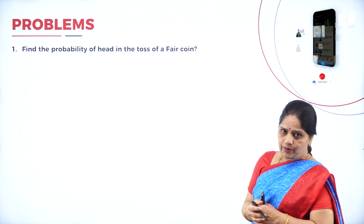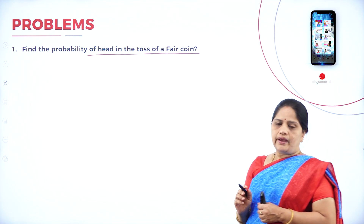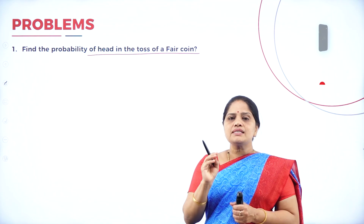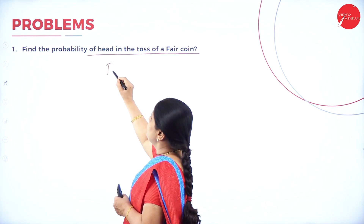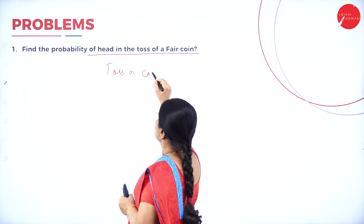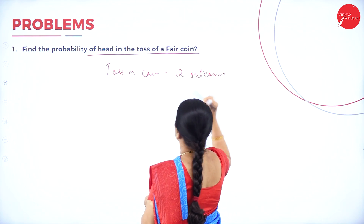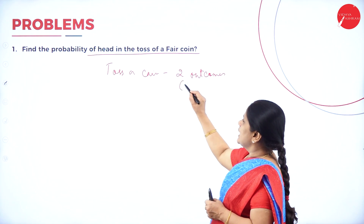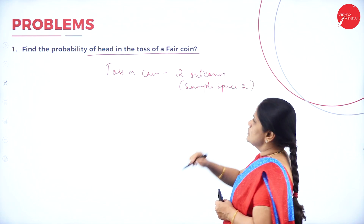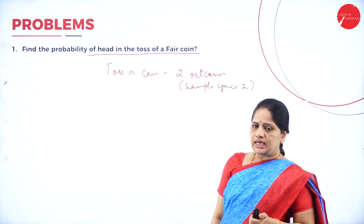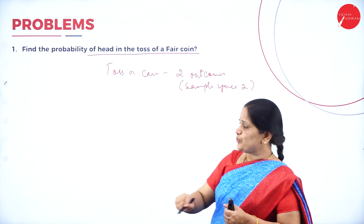Let us see what the first problem is. Find the probability of head in the toss of a fair coin. When we toss a fair coin, what is the sample space? Sample space means how many outcomes do we have. When we toss a coin, there are two outcomes. So when there are two outcomes, we say that the sample space is 2. When we toss a coin, we get two outcomes — either we get a head or we get a tail. So the sample space is 2.